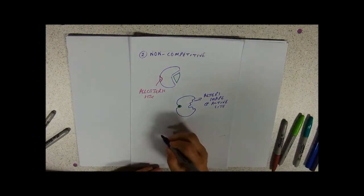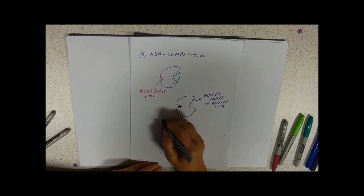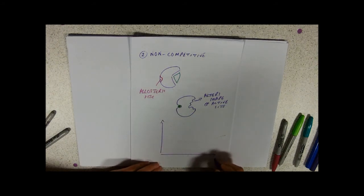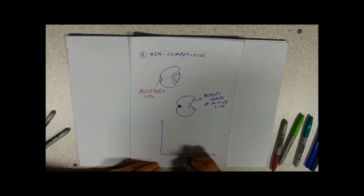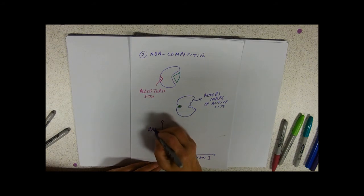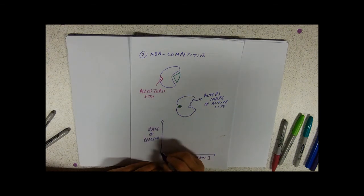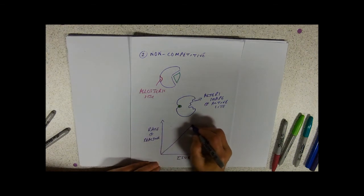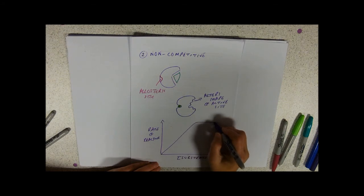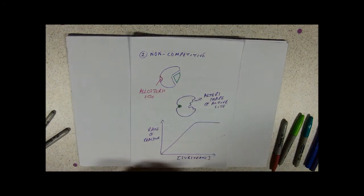So if we look at the graph, then, again, we're going to do the substrate concentration graph against rate of reaction. Normally, no inhibitor, increase in rate, levels off to maximum when all the active sites are full.